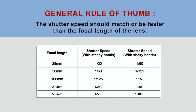In general, the rule of thumb is that the shutter speed should match or be faster than the focal length of the lens. For example, with 28mm, the closest shutter speed is 1/30th of a second. With 50mm, it's 1/60th of a second, and so on. If you have shaky hands, make the shutter speed at least twice as fast.